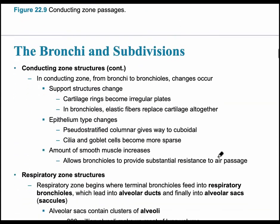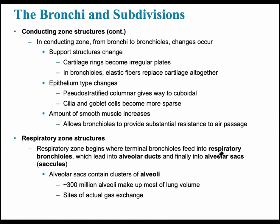Continuing into the conducting zone structures, one very important point is that as we go from bronchi to bronchioles, there are changes in the support structure. The cartilage rings become irregular and are eventually replaced altogether in the bronchioles. The epithelium also changes from pseudostratified columnar — as found in the trachea — to cuboidal, and the cilia and goblet cells become more sparse. The amount of smooth muscle increases, which is important because it allows bronchioles to constrict or dilate in response to different chemicals.